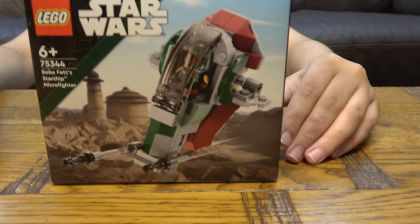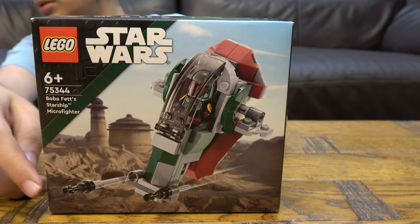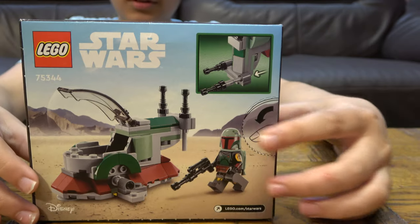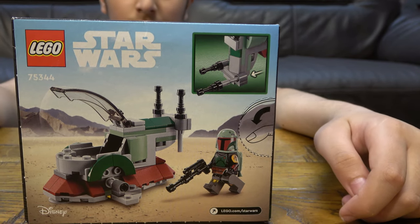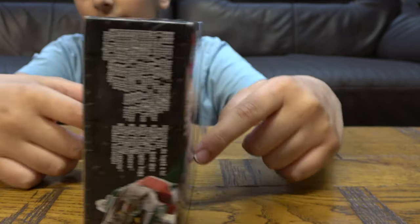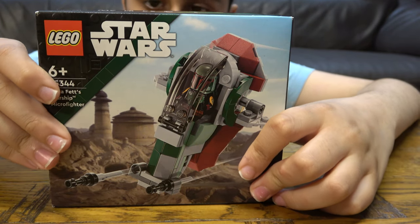So here is the box and here is the back. It shows the play features with the Flickfire missiles. And I'm really excited because I actually don't have a Boba Fett minifigure and getting one will be really nice. So let's open it.